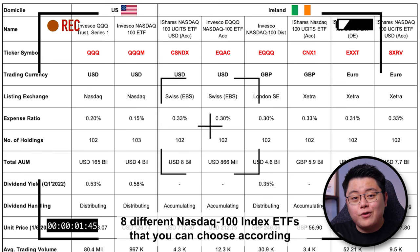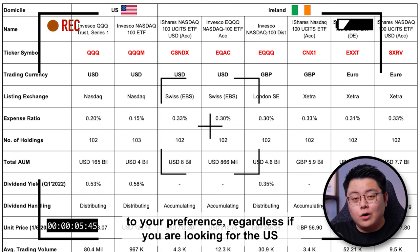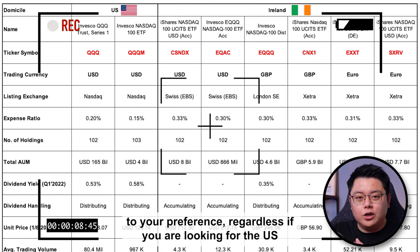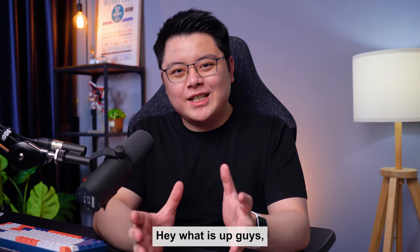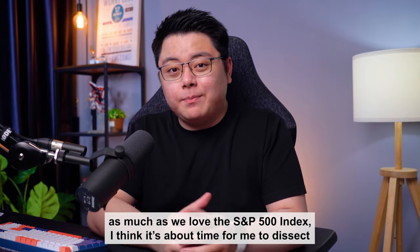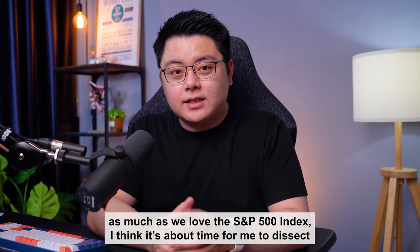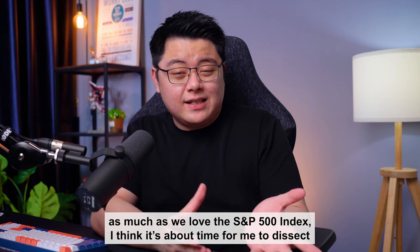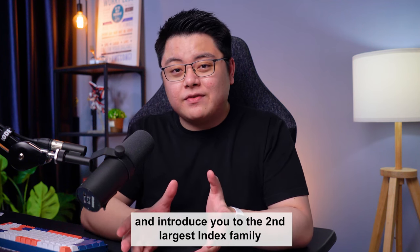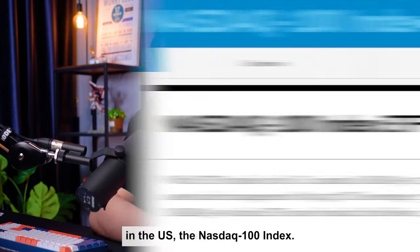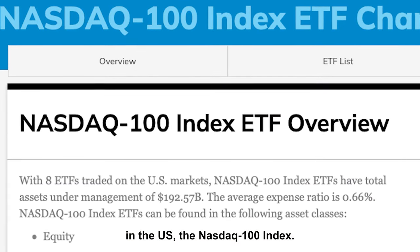So there you go — 8 different NASDAQ 100 Index ETFs that you can choose according to your preference, regardless if you are looking for the US or European version of it. Hey, what is up guys? I think it's about time for me to dissect and introduce you to the second largest index family in the US: the NASDAQ 100 Index.